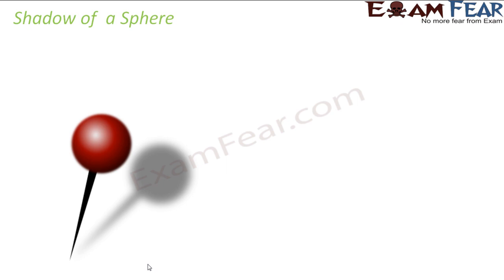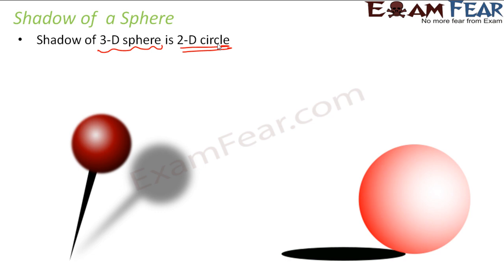Shadow of a sphere. So here if you see this, the head of the pin is a sphere and its shadow is a circle. So again, a three-dimensional sphere has a two-dimensional circle as shadow. It also holds true for a ball which is placed on a table. If light is coming from this direction, what do we see? We see that we get a circle as a shadow.